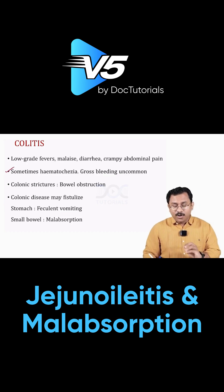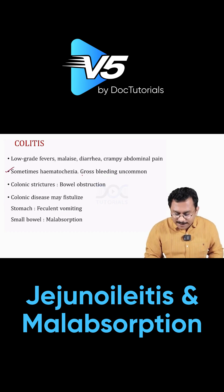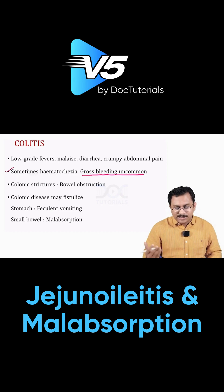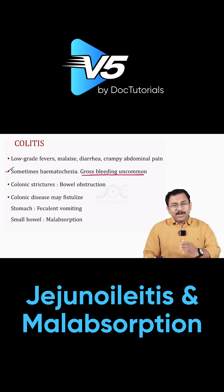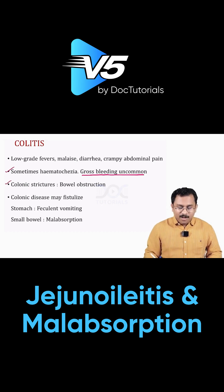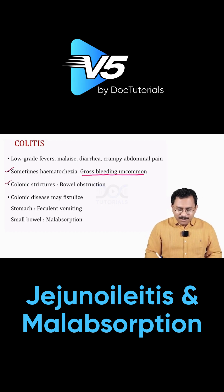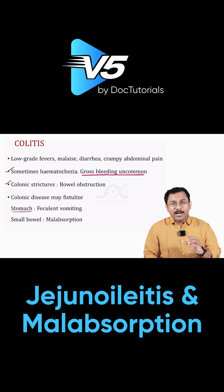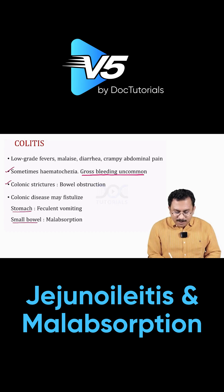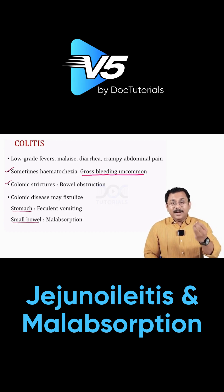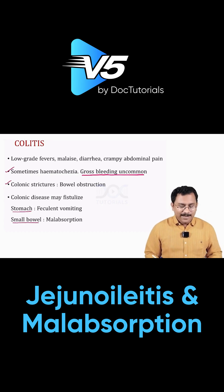Sometimes hematochezia can occur — some blood in stools — but gross bleeding is uncommon. When there is a colonic stricture, bowel obstruction can occur. Fistula is another problem: you can have a fistula between the colon and the stomach, causing feculent vomiting, or a fistula between the colon and the small bowel, which can result in malabsorption. Direct passage from the small bowel to the colon can also result in malabsorption.